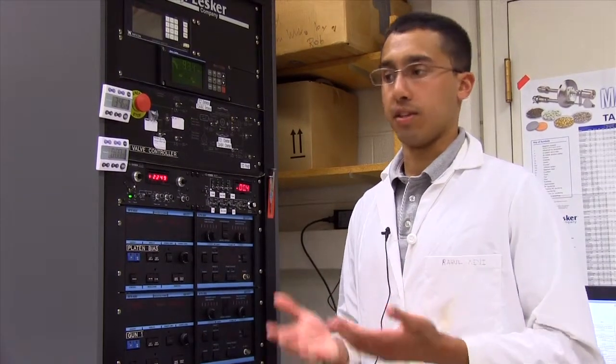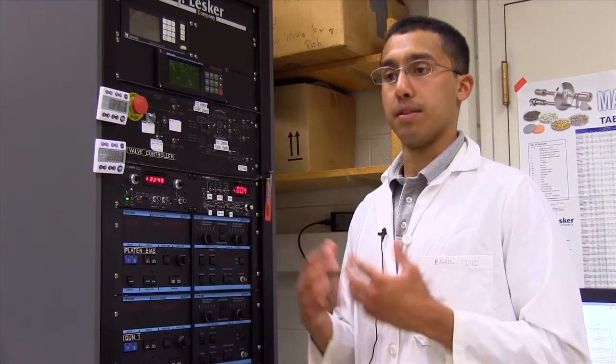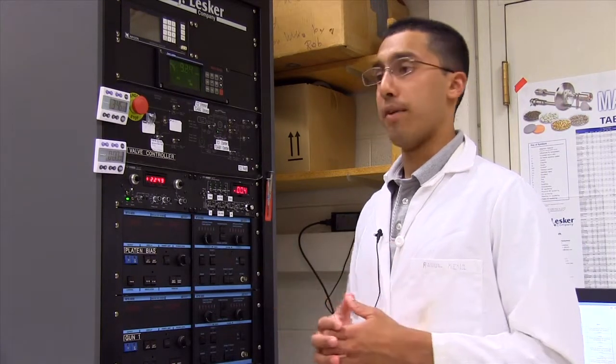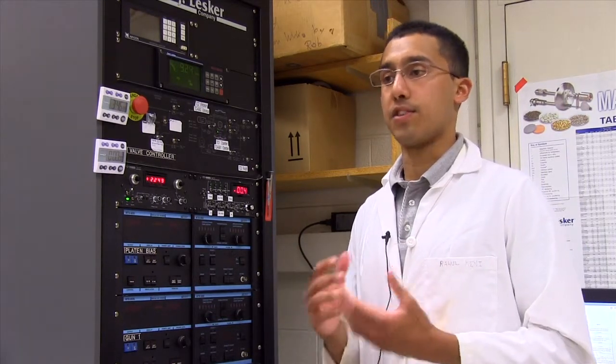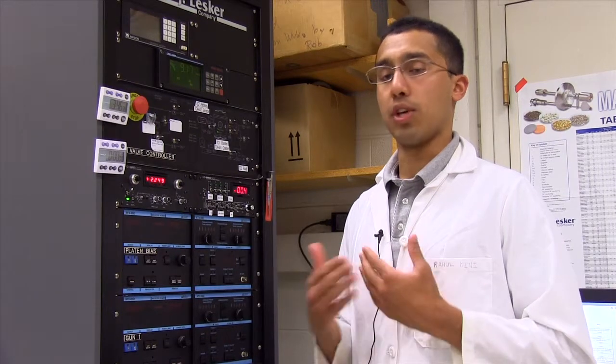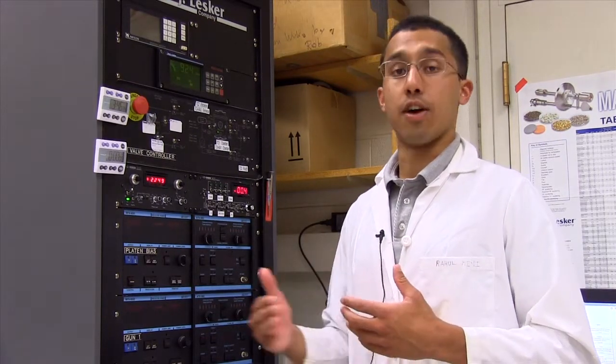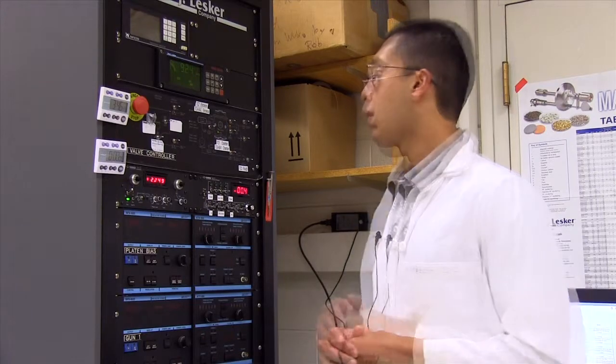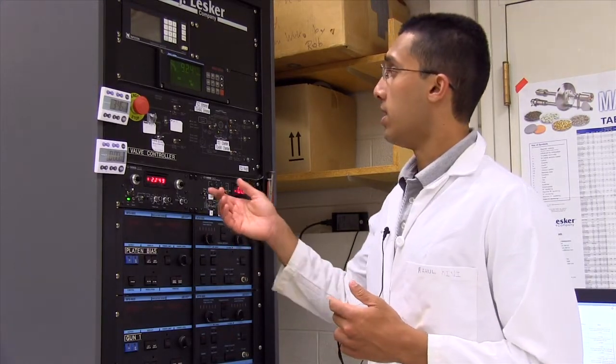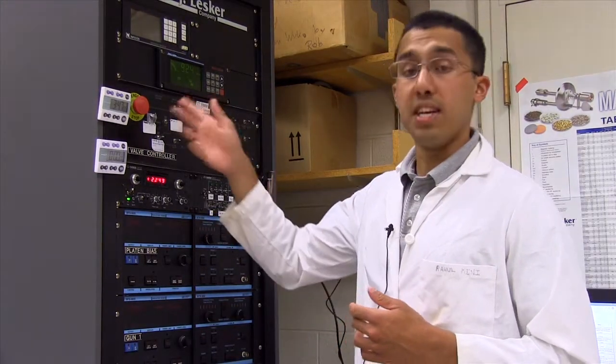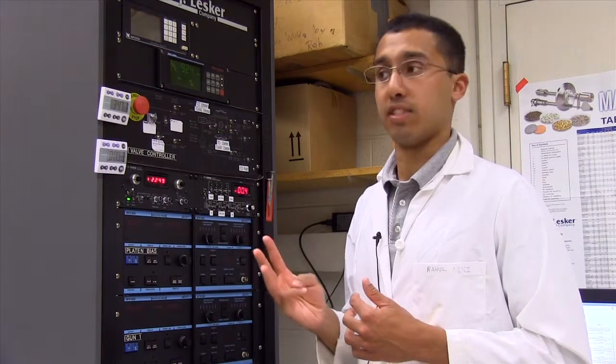So the sputtering machine that we use is an essential tool of how we deposit each layer of our battery. This is a thin film battery, so we have to monitor the size of each of our layers, which is on the order of about 100 nanometers to maybe 800 nanometers per layer. Here, what we do is we control three different guns that have three different types of substrates.